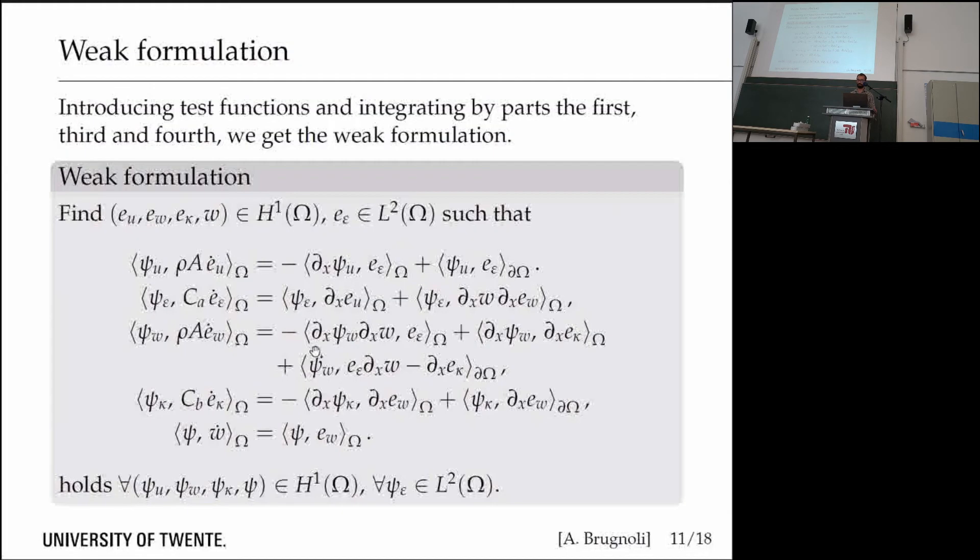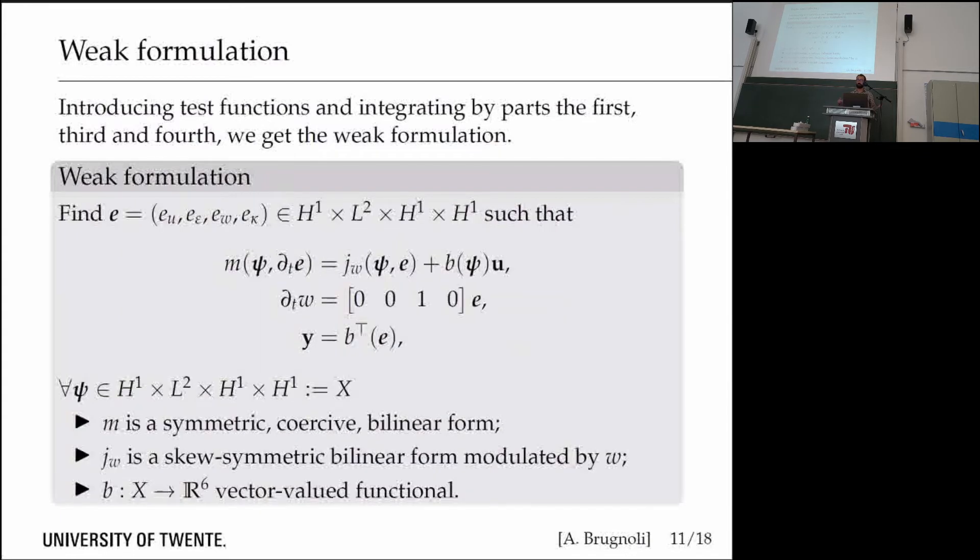This weak formulation is such that we need to find the co-energy variable belonging to H1 and this one to L2, such that it holds for all test functions in the same Hilbert spaces.